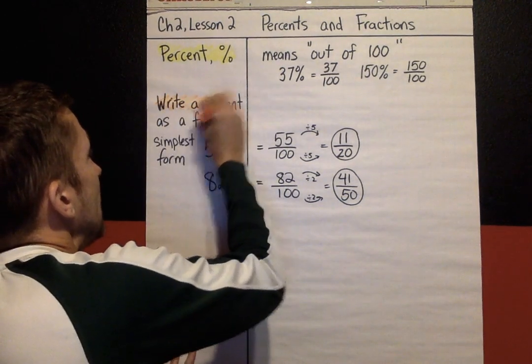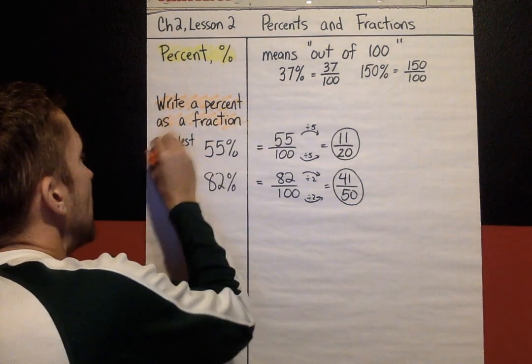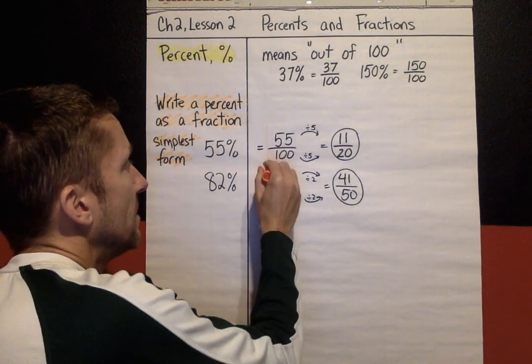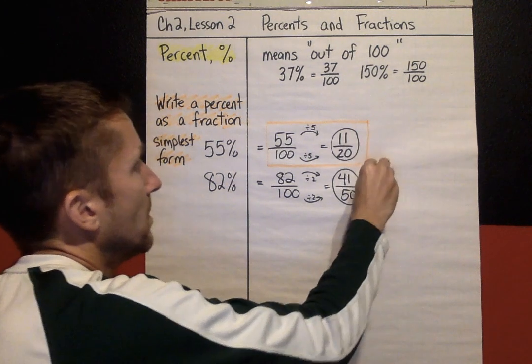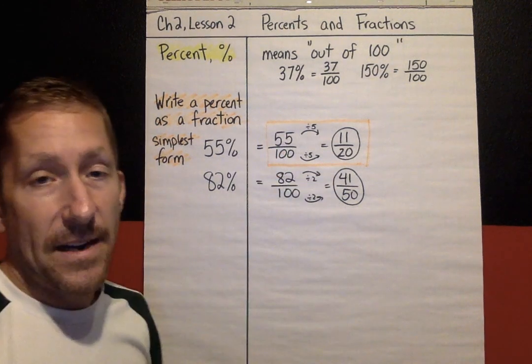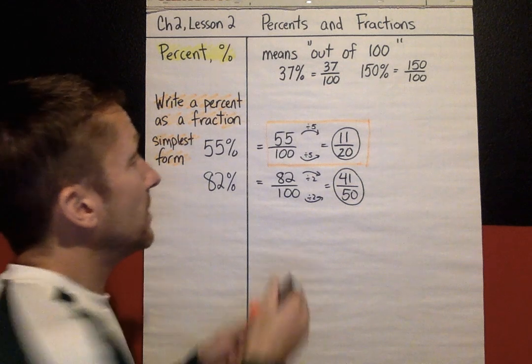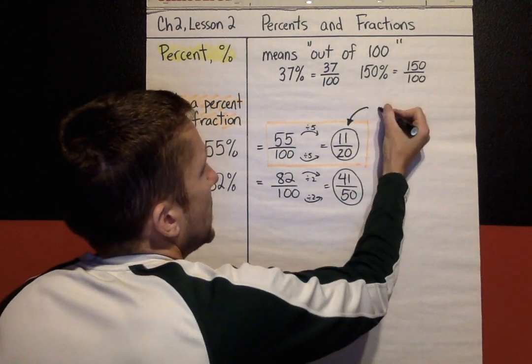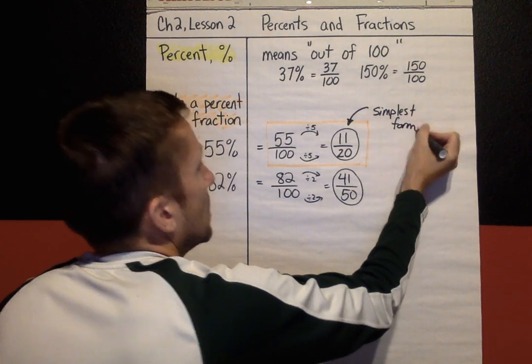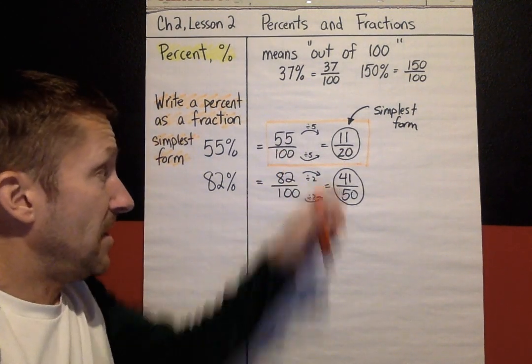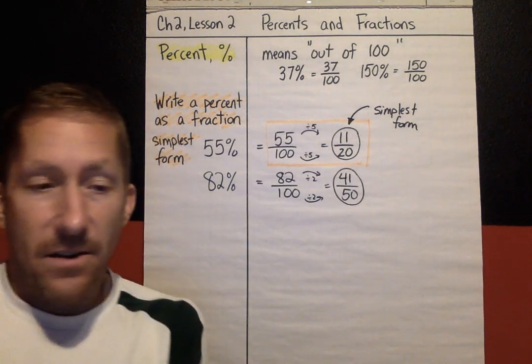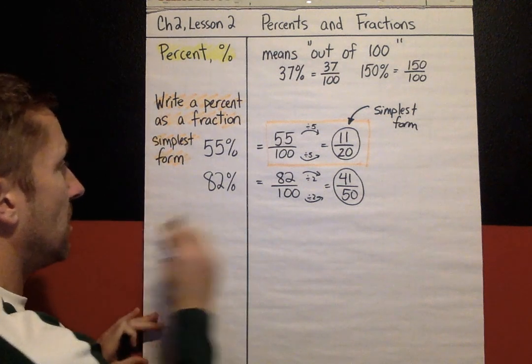Half of your practice today is this: How do you write a percent as a fraction in simplest form? So this is what your work should be looking like today. For half of your practice problems, you're writing a percent as a fraction and then simplifying it into a simplest form fraction. This answer is correct, 55 out of 100, it's just not in simplest form. 11/20 is simplest form.